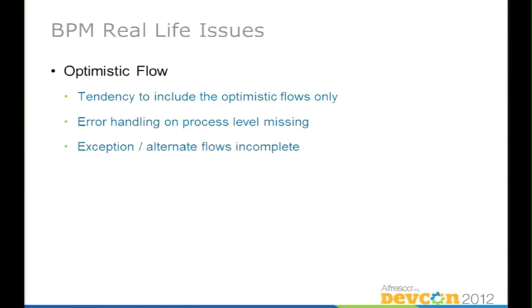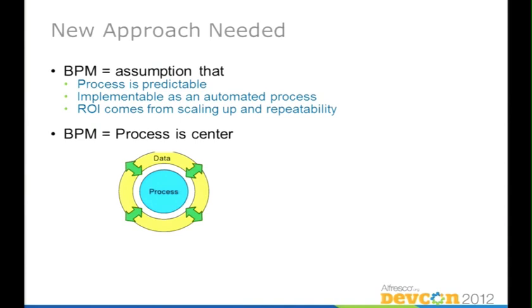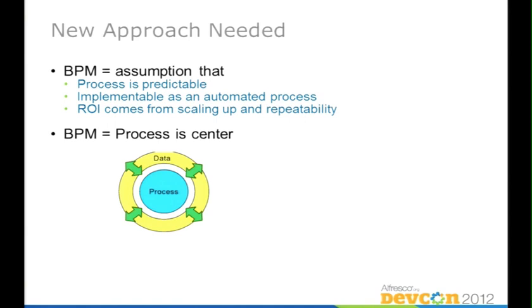The optimistic flow assumption is that nothing will go wrong — you just do it that way. Then suddenly something goes wrong and you have to deal with it. The current BPM approach is: the process drives everything, the process is predictable, it's implementable as an automated process, and return on investment will come over time. Cost-benefit analyses on workflow projects always look good. But after implementation and five years in production — that's a different story. In BPM, the process is the focus or center and data is just secondary.